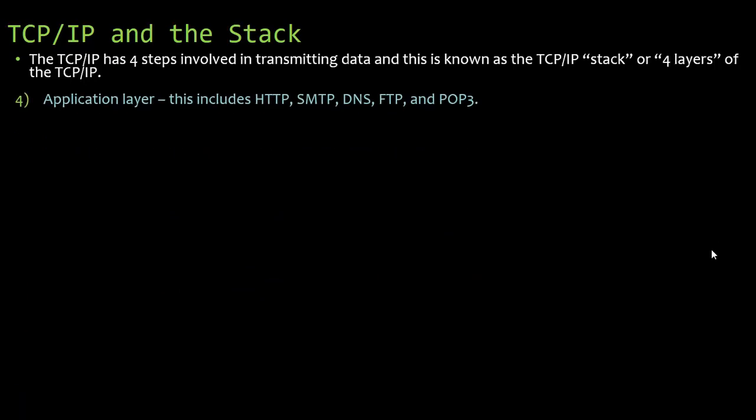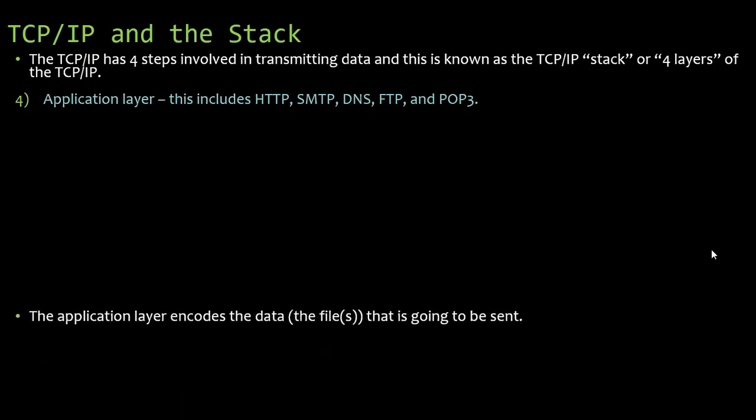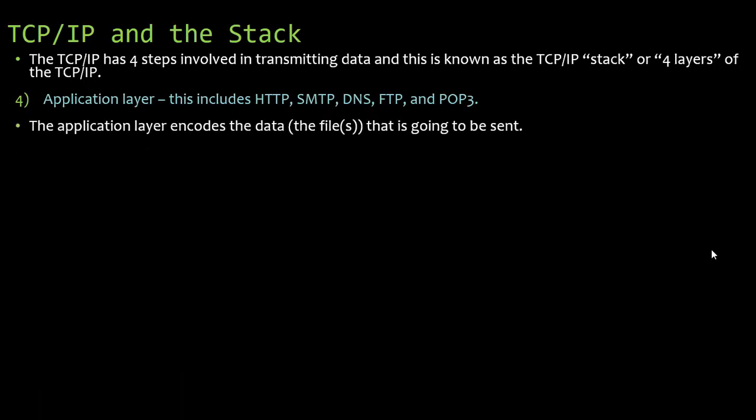Starting with the application layer, which is the fourth step: this is your HTTP, SMTP, DNS, FTP, and POP3 — we'll talk about all those in detail towards the end. The application layer encodes the data, the file that is going to be sent.